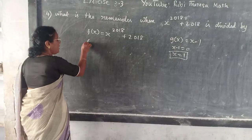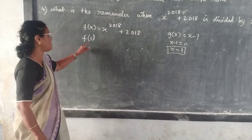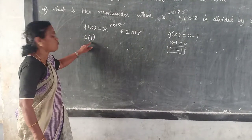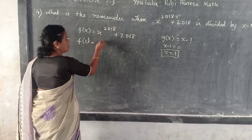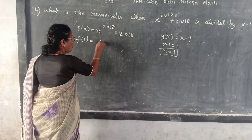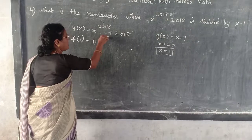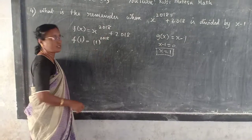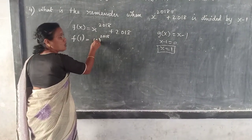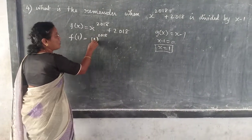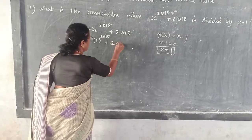In the place of x, what you are going to substitute? 1. So f(1) is the remainder. In the place of x, you are going to substitute 1 — so we get 1 to the power of 2018 plus 2018.